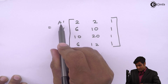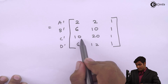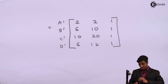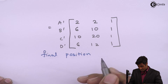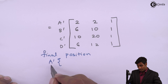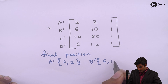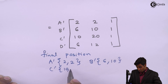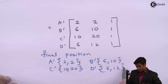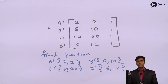After multiplying the matrices the final coordinates are: A' = (2, 2), B' = (6, 10), C' = (10, 20), D' = (6, 12). So we have successfully calculated the resultant transformation and the final position of the rectangle after applying shear transformation in both x and y directions. Thank you.